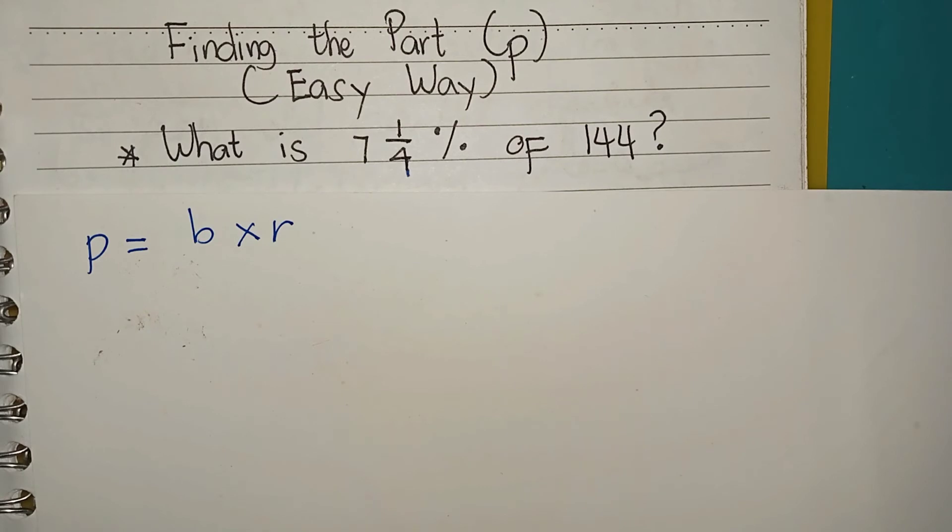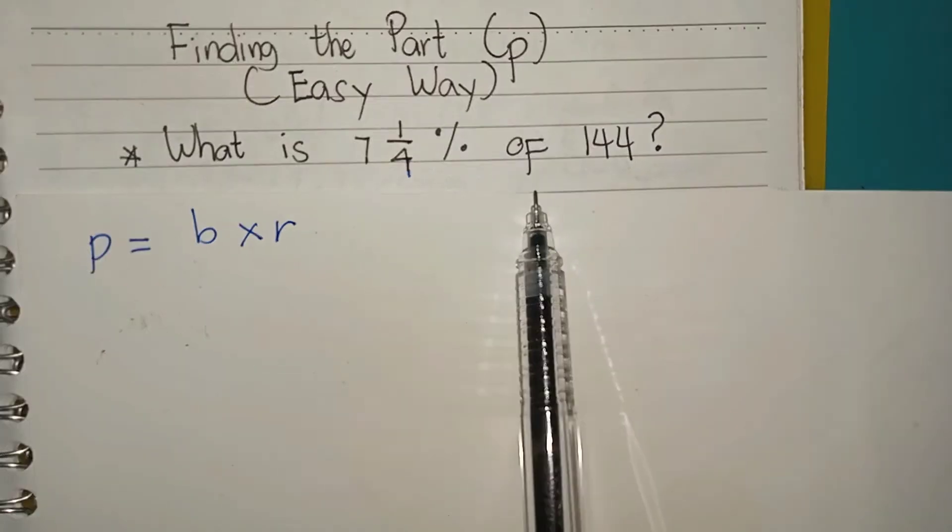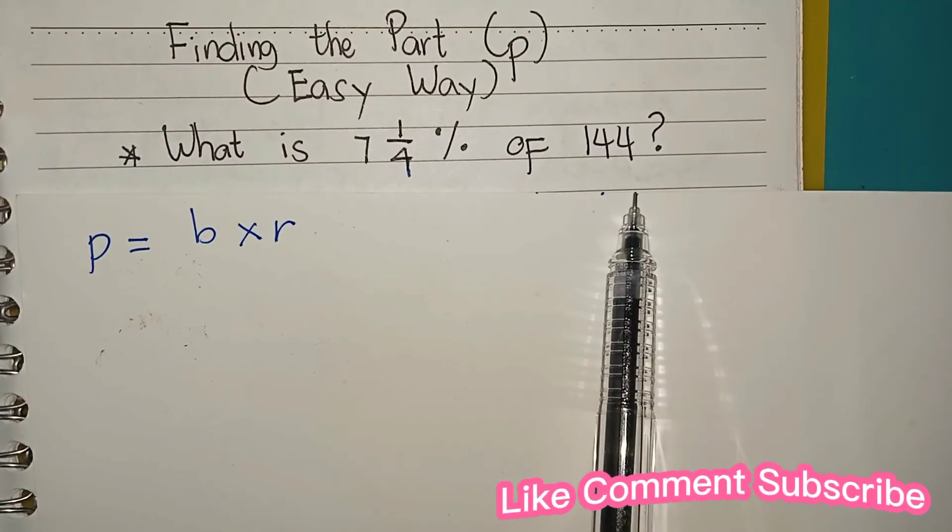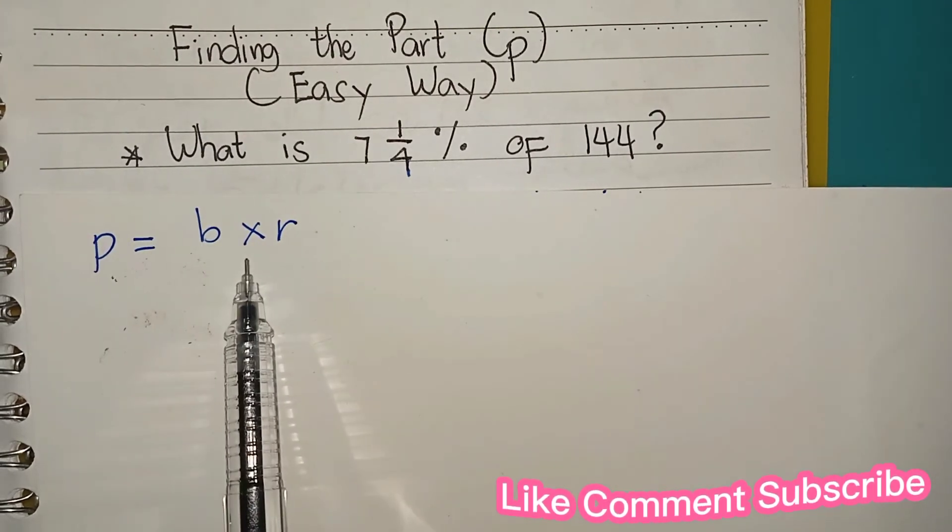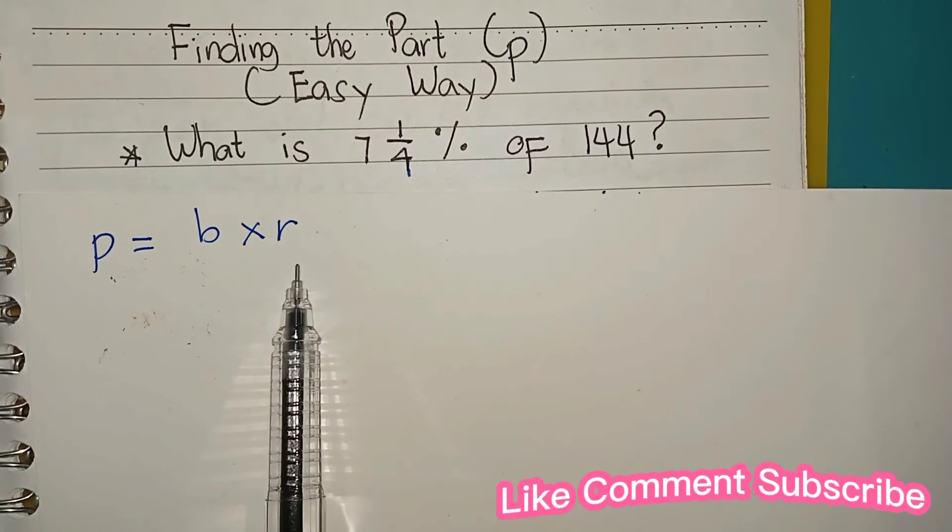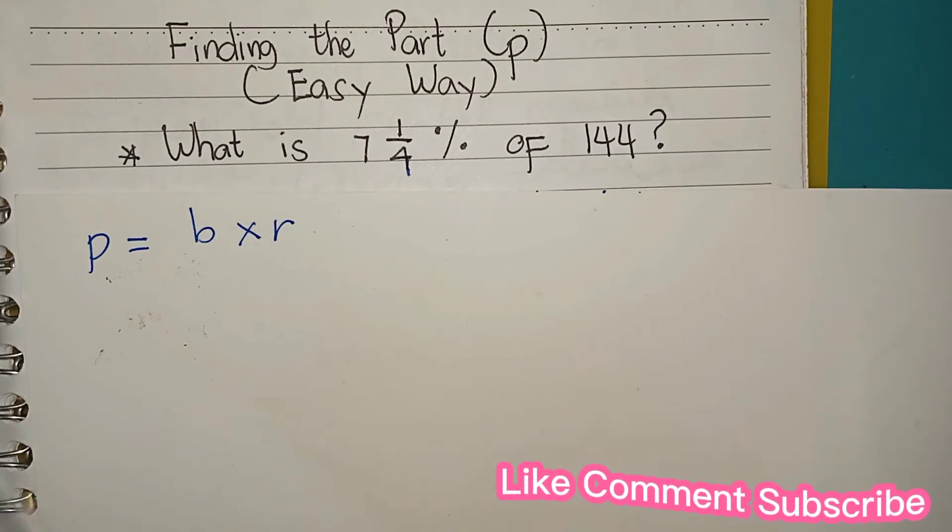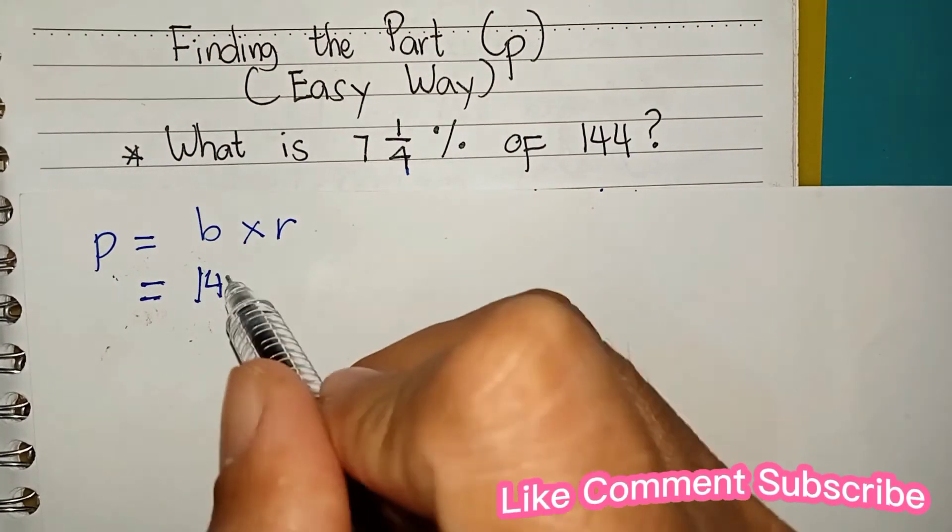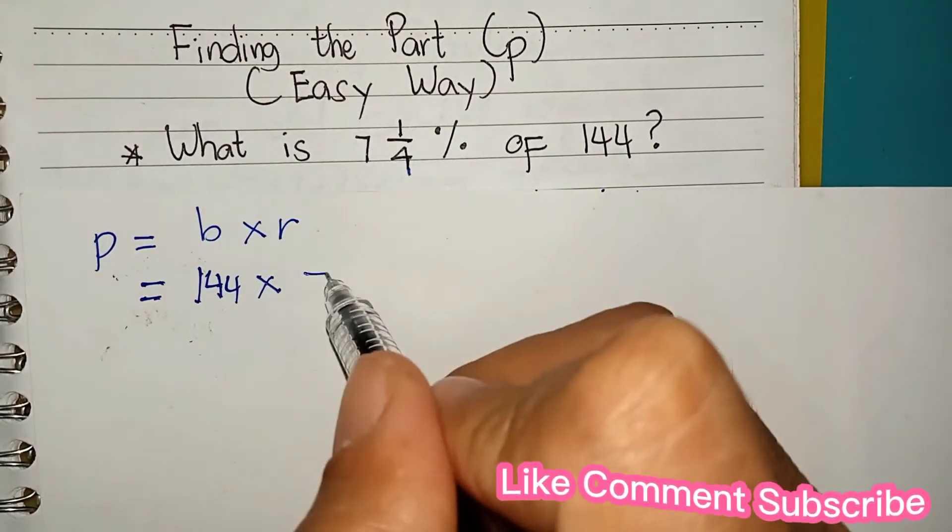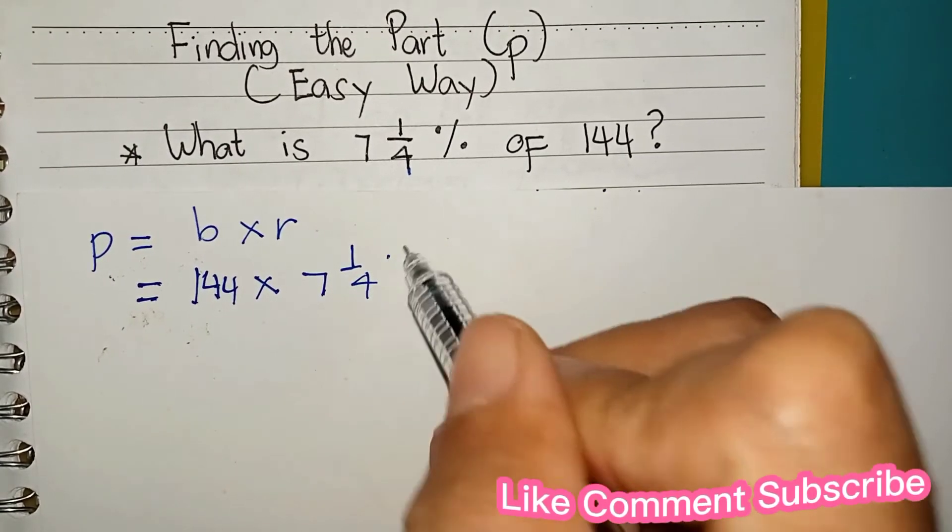Finding the part the easy way. The problem: What is 7 1/4 percent of 144? The formula is part equals base times rate. Identify the base and rate. The base is 144, and the rate is 7 1/4 percent.